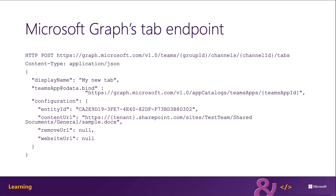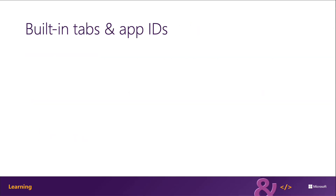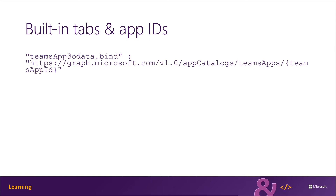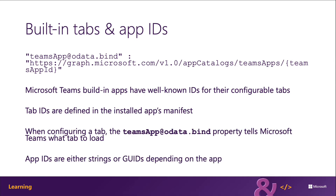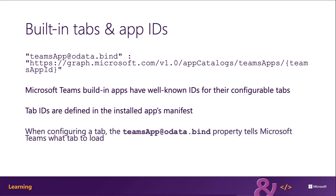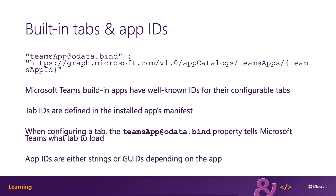The configuration object contains multiple properties, some that are required, that the tab uses to load the specified content. All these built-in tabs have app IDs, and all of these IDs are well known for all the different tabs that are configurable. Tab IDs are defined by the installed app's manifest, so when you're configuring a tab, that teamsApp @odata.bind property tells Microsoft which one it's supposed to load. These app IDs are either strings or GUIDs depending on the app — they're all really strings, it's just some of those strings are also GUIDs.